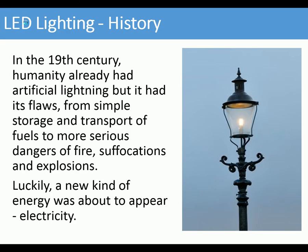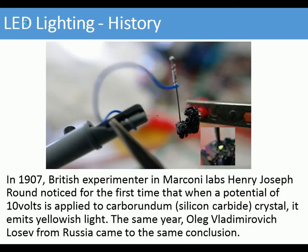We're looking first at a history of lighting. In the 19th century, humanity already had artificial lighting from candles and things like that, then gas. However, the transport of fuels like gas and paraffin had dangers of fire, suffocation and explosions, so electricity appeared in the 19th century — the first real improvement in lighting.